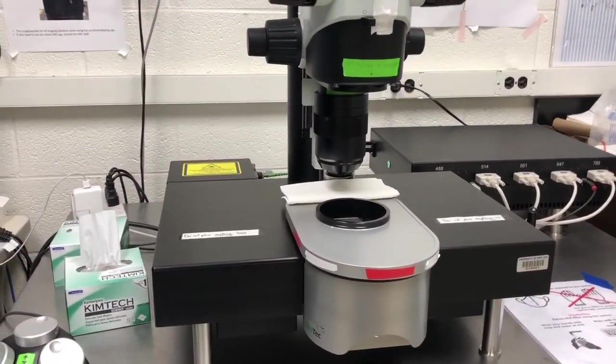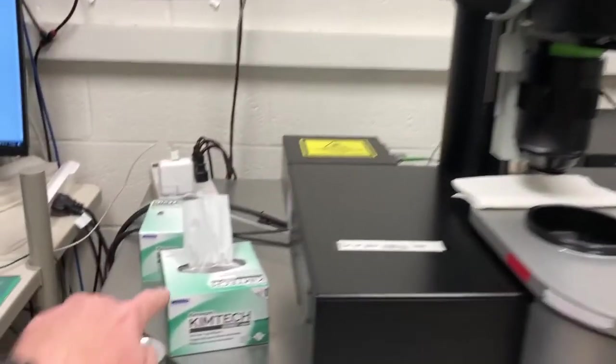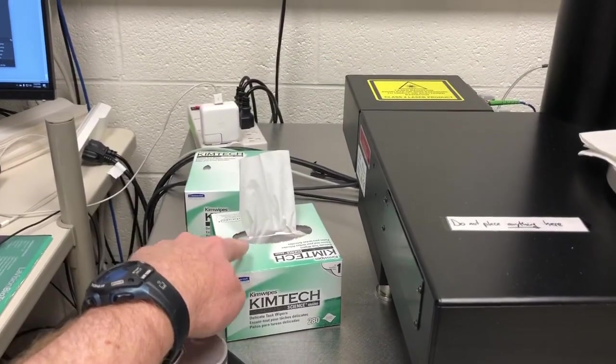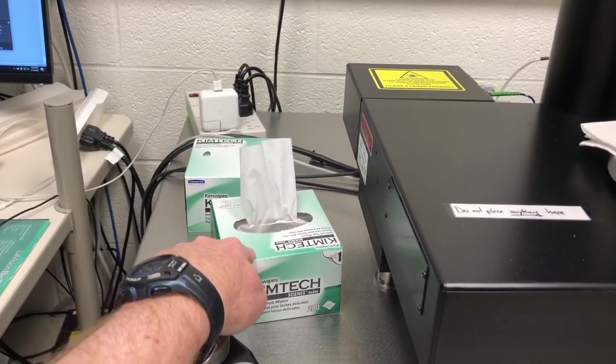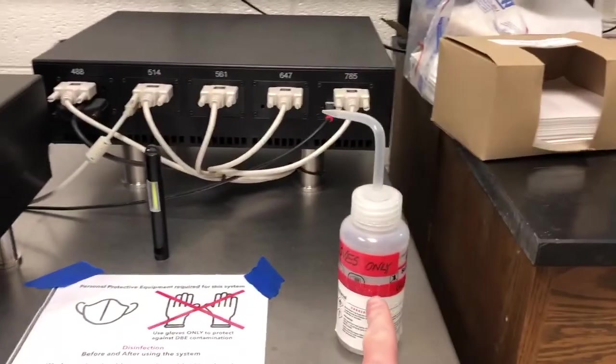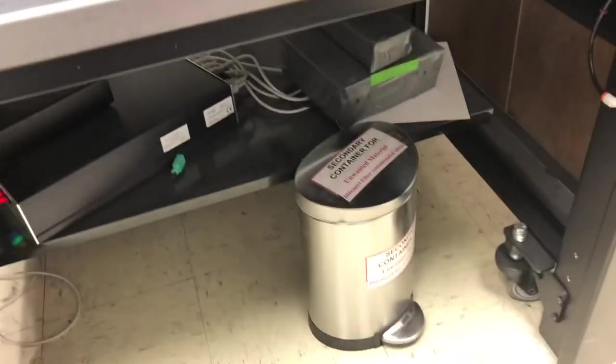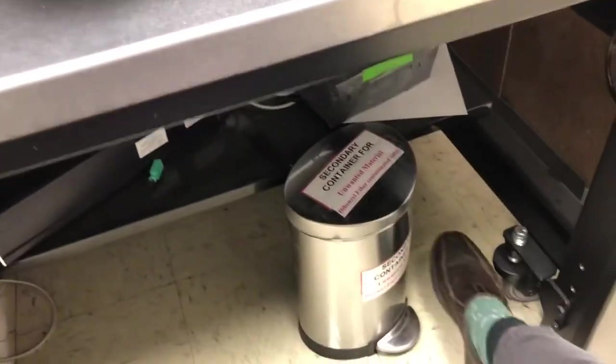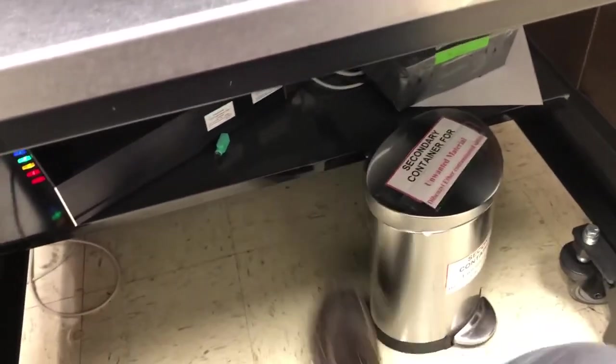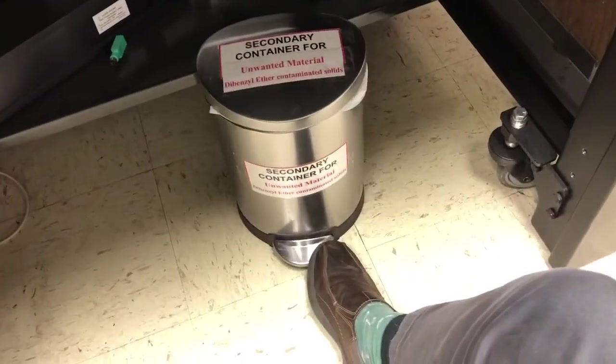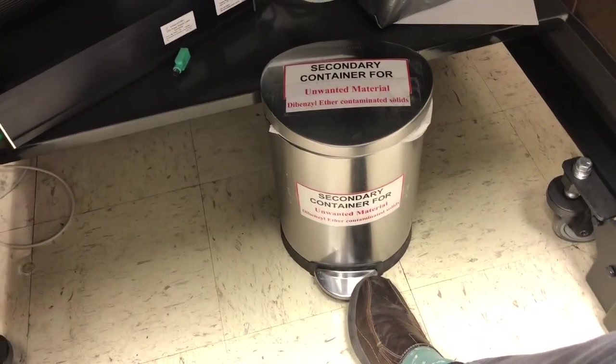A few things you'll need when you're cleaning the objective are kim wipes for the parts of the objectives that don't have the lens, ethanol, lens paper, and whatever glove size you need. Finally you're going to throw away things that have been in contact with DBE in this container here.